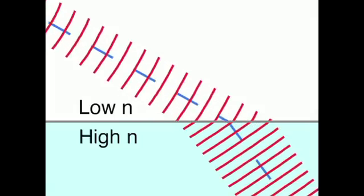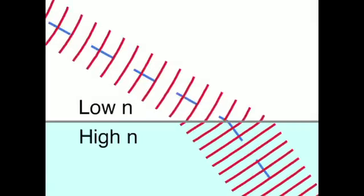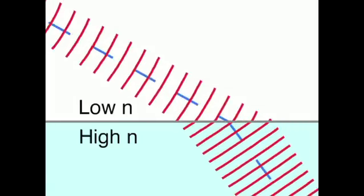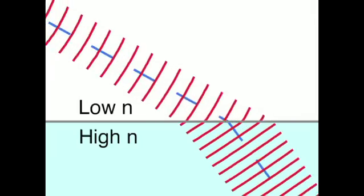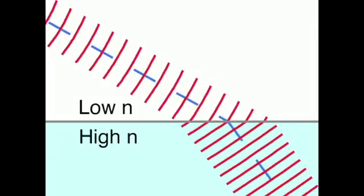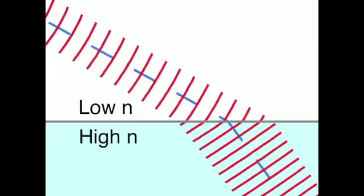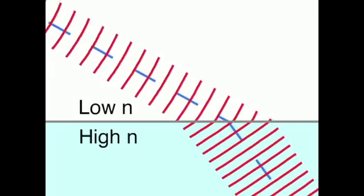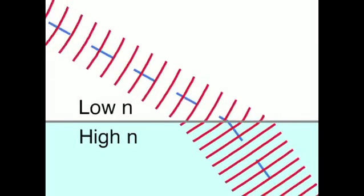As light crosses the boundary between two materials, the direction also changes. The portion of the wavefront that enters first slows down, causing the ray to bend in that direction. Essentially, light acts as if it wants to go to the area of higher index, or to take the quickest path between two points.